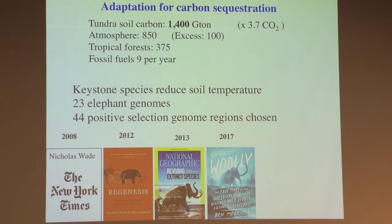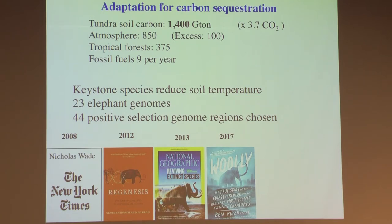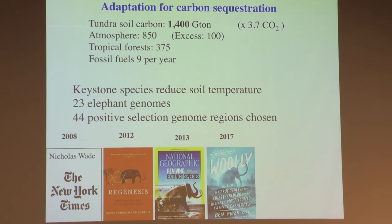We think about carbon in many ways. The tundra has 1,400 gigatons of carbon at risk. The entire atmosphere is 850 gigatons, and we burn only nine gigatons per year in fossil fuels worldwide. Tropical forests hold 375 gigatons. The 1,400 at risk includes methane, which has 30 to 80 times the global warming impact of CO₂. So one thing we're exploring is impacting soil temperature, because soil temperature is what puts that carbon at risk.